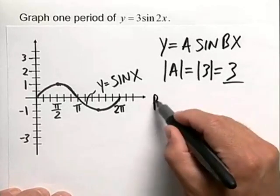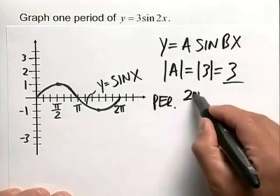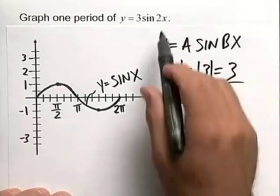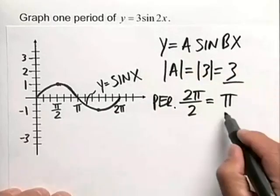We know that the period for this function, we have a formula. That formula is 2π divided by b, b in our example is 2, so we know that our period is π.